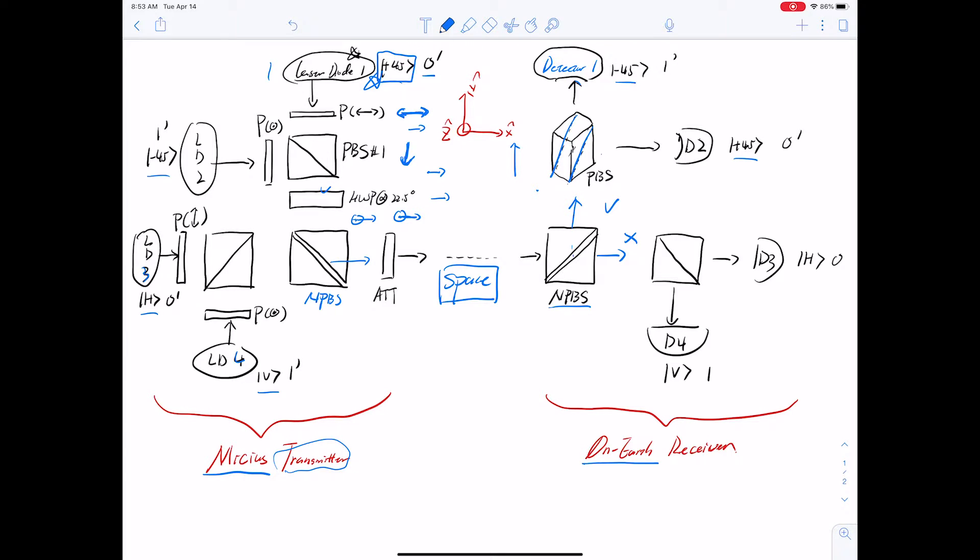Here is a simplified optical layout of the Micius transmitter and on-Earth receiver. The idea is that Micius can randomly fire one of these four laser diodes, encoding ones and zeros in either bases. Suppose laser diode one is fired. It goes through a horizontal polarizer, a polarizing beam splitter, and then a half-wave plate which has a 22.5 degree angle with respect to the X axis, turning this horizontal polarization state to a plus 45 degree polarization state along the X and plus Z direction.